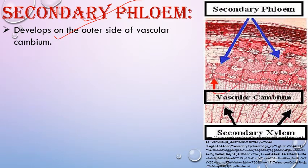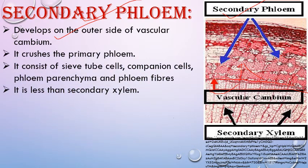This is the vascular cambium region. Primary phloem, due to secondary phloem, gets crushed and remains only in small stretches, otherwise it gets completely crushed and is replaced by secondary phloem. Components of secondary phloem are sieve tube cells, companion cells, phloem parenchyma, and phloem fibers.